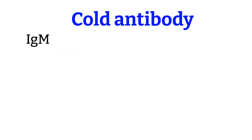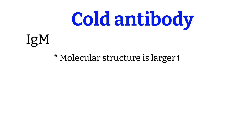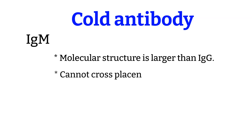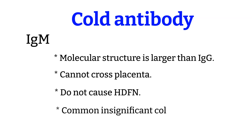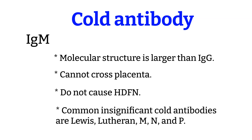The main immunoglobulin our body makes for clinically insignificant cold antibodies is usually IgM. The molecular structure of IgM is large, and because of its size, it cannot cross the placenta, which explains why it does not cause hemolytic disease of the fetus and newborn. The most common clinically insignificant cold antibodies are Lewis, Lutheran, M, N, and P.